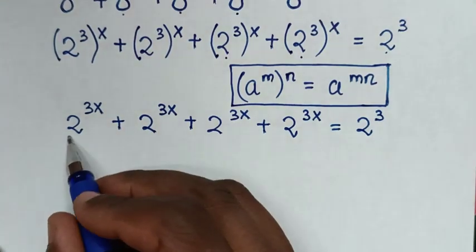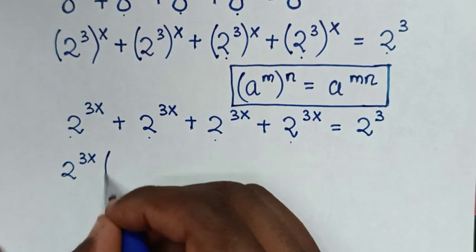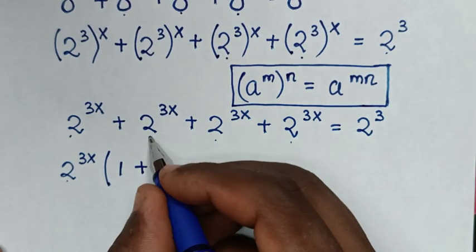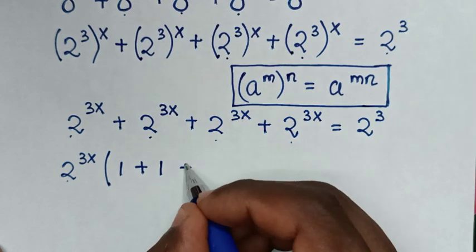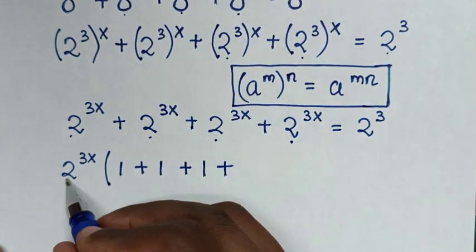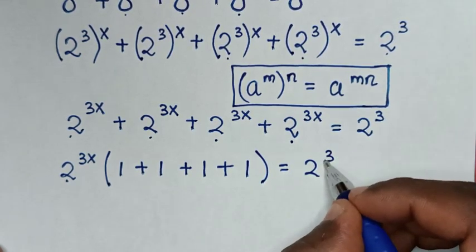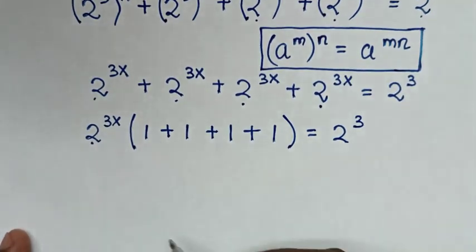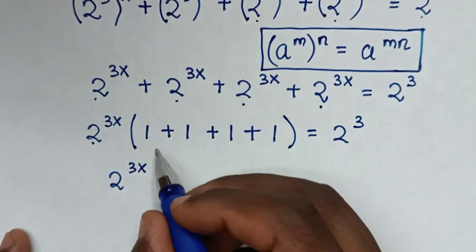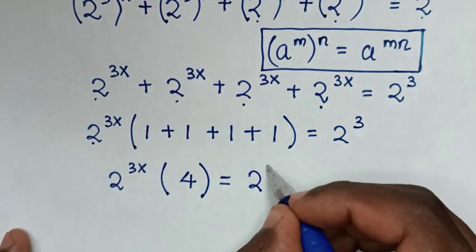In the next step, 2 power 3x is common, so we take 2 power 3x out of the bracket. Each term divided by 2 power 3x gives 1, so we get 2 power 3x times bracket 1 plus 1 plus 1 plus 1, which is 4, equals 2 power 3.